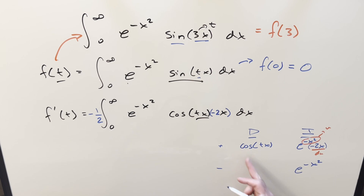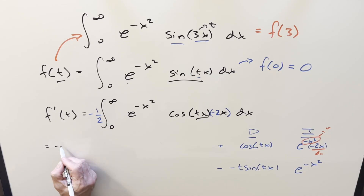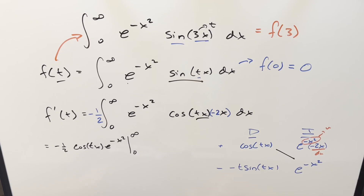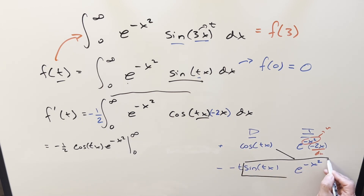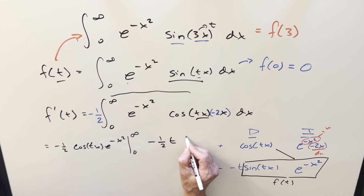Putting together the pieces and distributing the minus one-half: from the diagonal term we get cosine tx times e to the minus x squared, evaluated from 0 to infinity. The next term repeats because the integral that appears is exactly f(t). So: minus times minus is plus, but distributing in the minus one-half, we get minus one-half times t times f(t).